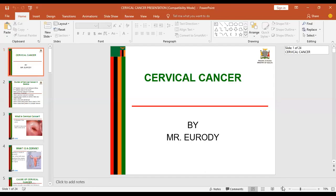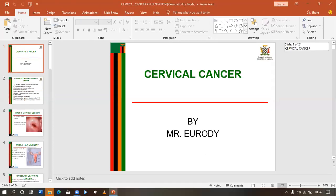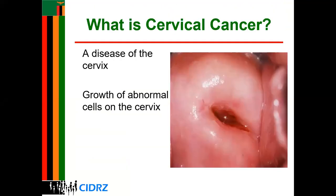Let's look at cervical cancer. We can define cervical cancer as the growth of abnormal cells on the cervix. This can be characterized by abnormal vaginal discharge with an unpleasant smell, bleeding, backache, and lower abdominal pain. Just like any other cancer, it is caused by abnormal proliferation or growth of cells, but these cells are growing abnormally on the cervix.